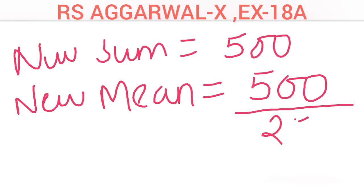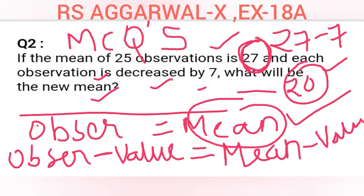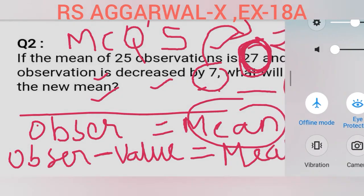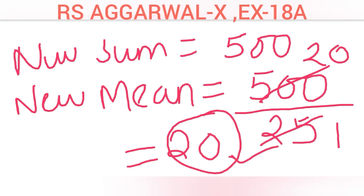New mean = new sum divided by number of observations = 500 divided by 25 = 20. So the answer is 20. For MCQs, you can use the direct method: old mean minus the subtracted value. The answer is 20. If you like my video, please share with family and friends and subscribe. Thank you very much.